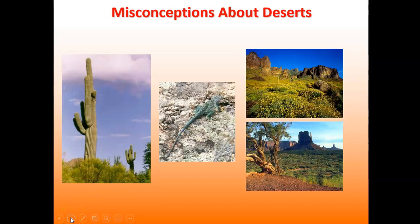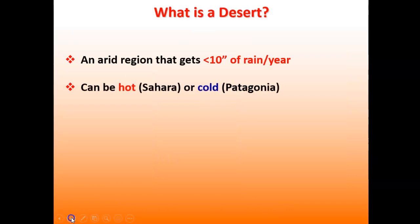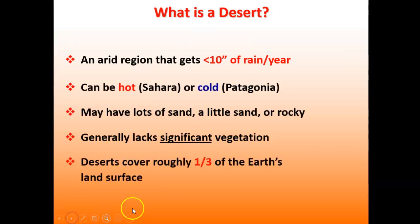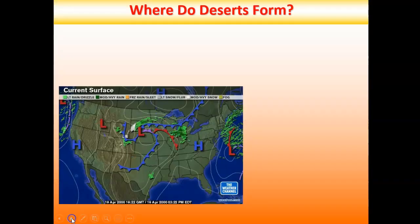Deserts like where we live have lots of life — it's just a little different than other places. So what we expect from deserts is less than 10 inches of rainfall a year. It can be hot or cold, with or without sand, and can be very rocky. In general there's not much vegetation, and deserts cover roughly about a third of Earth's land surface.